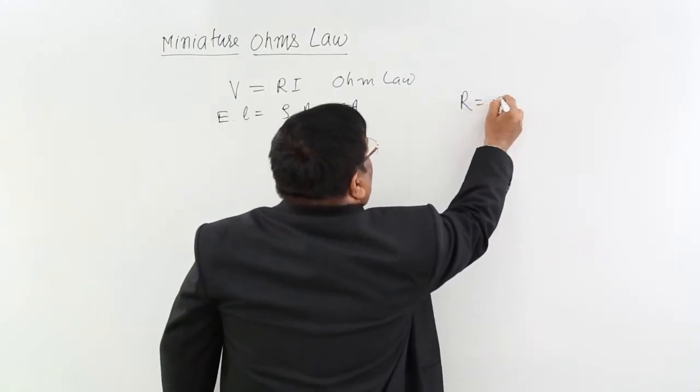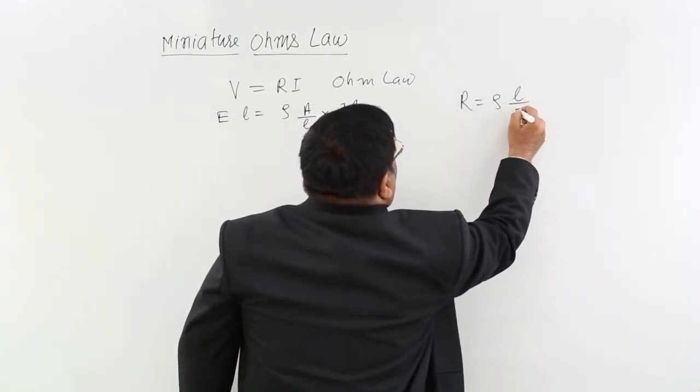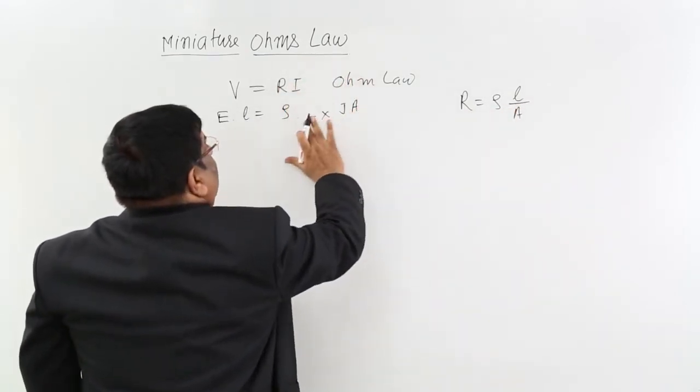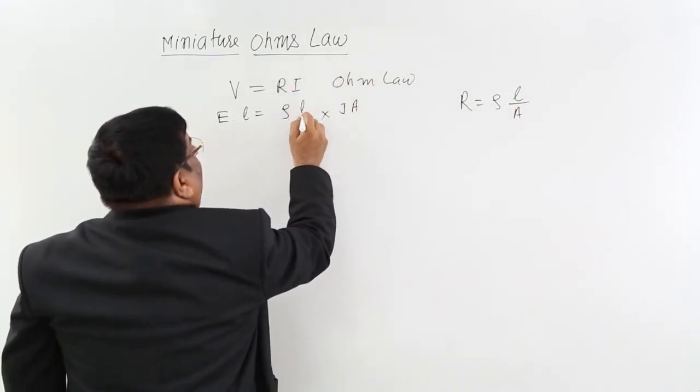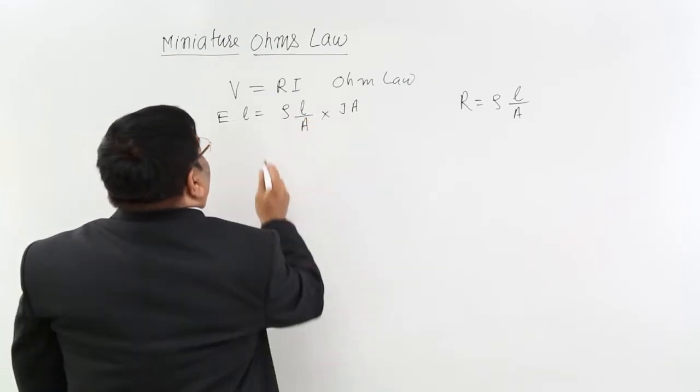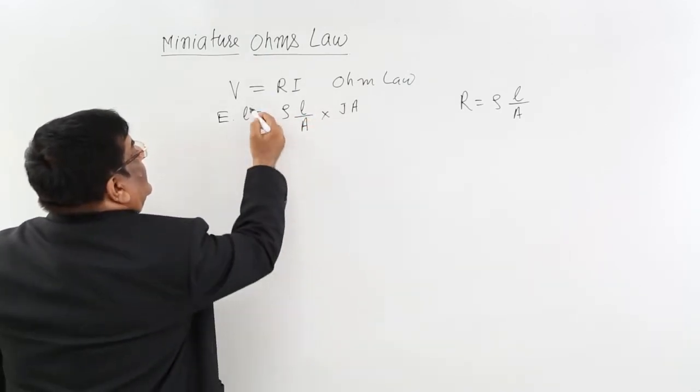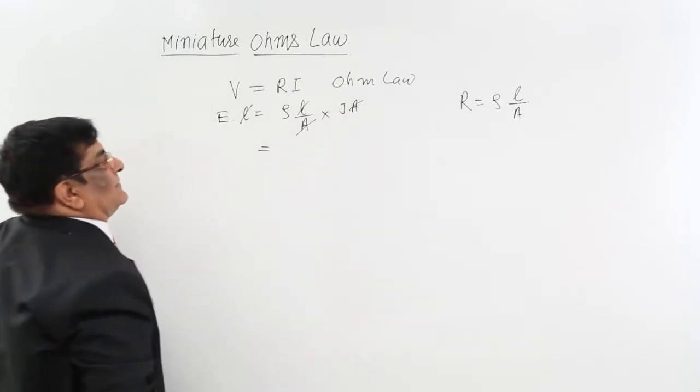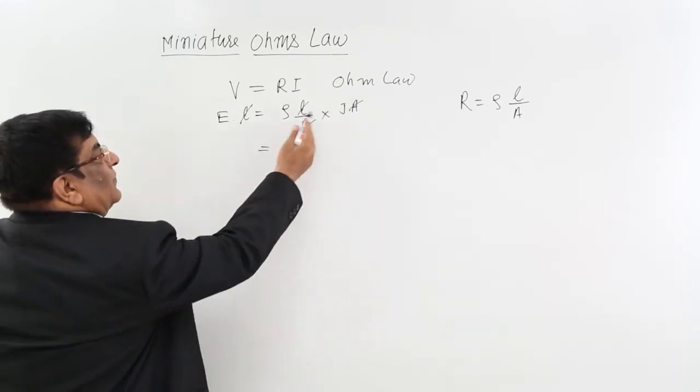R equals rho L upon A. Here L L is cancelled, A A is cancelled. So we get this formula.